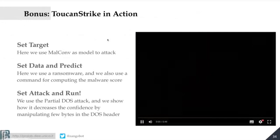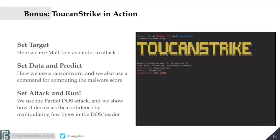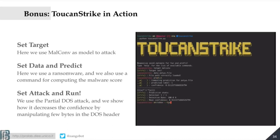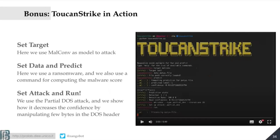To conclude, a short video shows how you can use ToucanStrike: you type the target you want, add the data — in this case a ransomware called Petya — do some prediction on it, and create a white-box attack against MalConv by just typing it. That is how you can both weaponize these things and use them to test your appliance. The attack is concluded and successfully bypasses the detector.